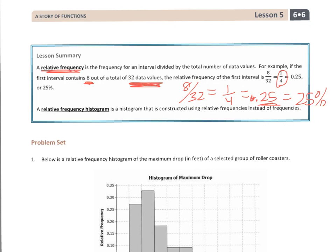Now, a relative frequency histogram is a histogram that is constructed using relative frequencies instead of regular frequencies.